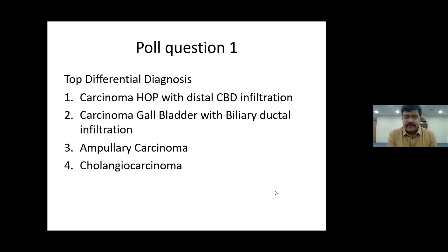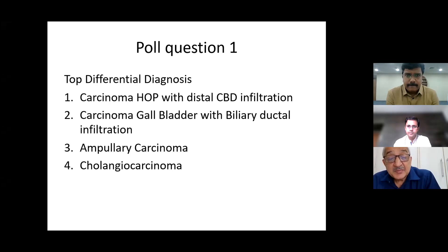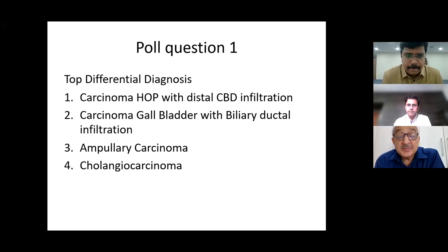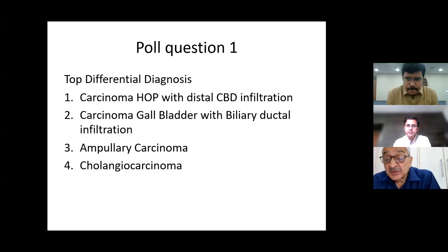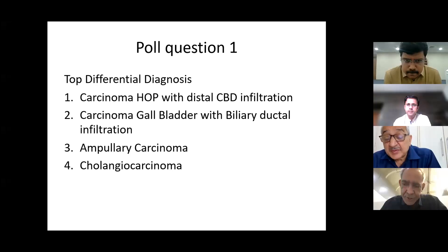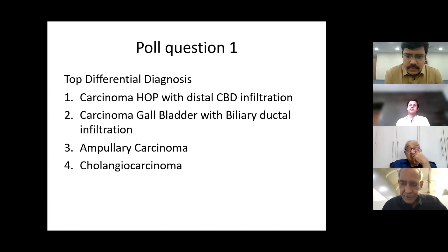Before proceeding with the poll, a few basic points. You have already decided it is extrahepatic biliary obstruction, but how have you ruled out intrahepatic cholestasis on history? We haven't examined the patient yet. What are the points in this patient by which you say this is definitely extrahepatic and not intrahepatic cholestasis? On the summary: it is painless progressive jaundice, no fever, no history of cholangitis, no surgery, no interventions - so no hard pointer in favor of extrahepatic.